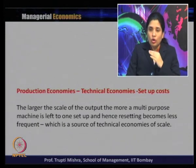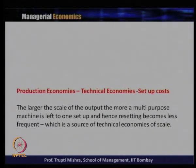In one setup all doors get produced, in another setup the wings, in another the frame. If the scale is large, the average setup cost goes down with each unit of output. But for a small plant, the setup cost cannot be spread over a larger amount of output, so overhead cost per unit is higher. Larger scale gives a cost advantage — that is the source of technical economies of scale.